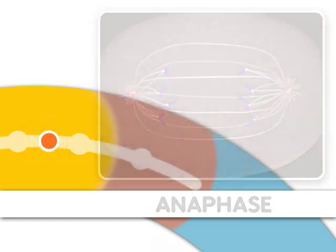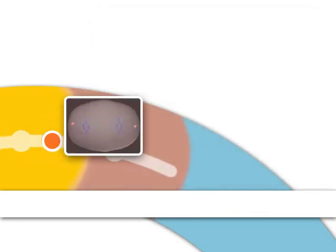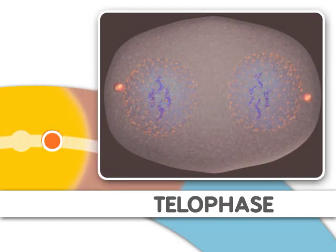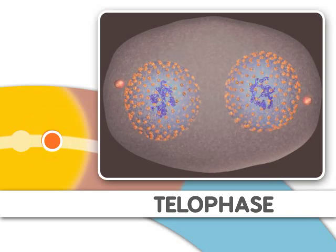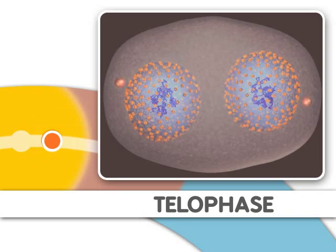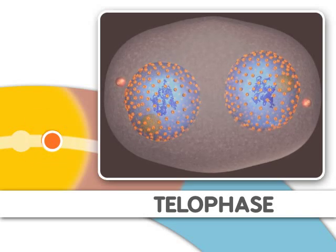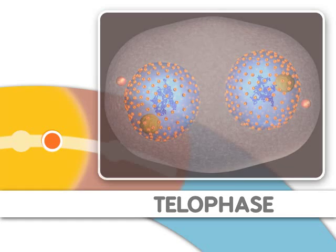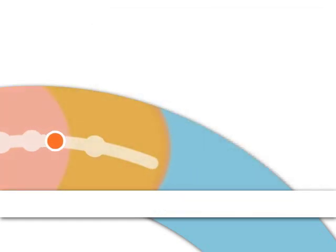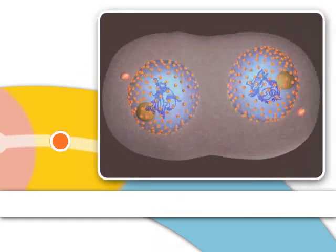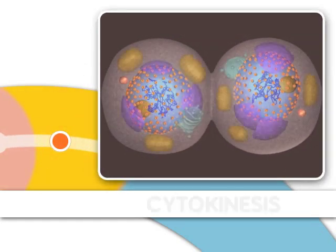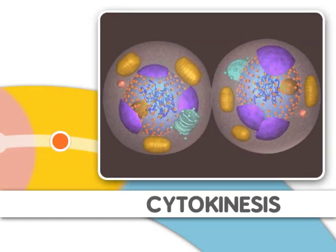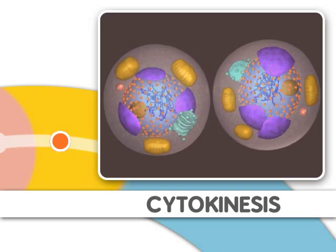Finally, during telophase, nuclear membranes reappear around the two sets of chromosomes. Mitosis is now complete. After mitosis, two new cells are formed by a process called cytokinesis.